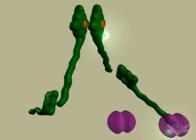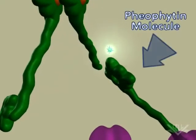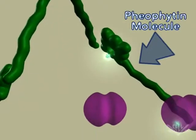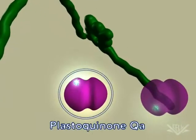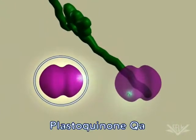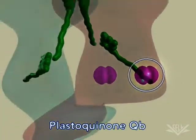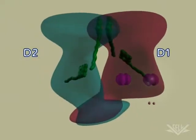In Photosystem II, the electron is then passed to a pheophyton molecule. The electron is then passed to plastoquinone QA and then to plastoquinone QB. These plastoquinone molecules are embedded in the D2 and D1 proteins.